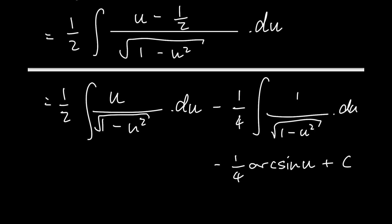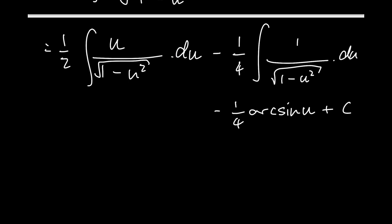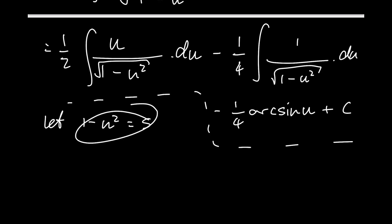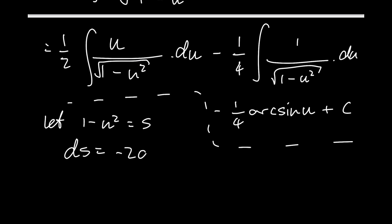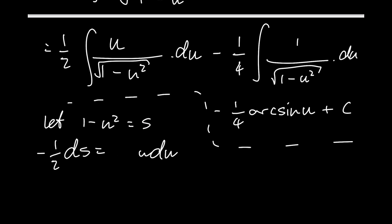For this first integral, we're going to make a substitution. We're going to let 1 minus u squared equal to s. This will be a good substitution because we'll be left with u to the first degree after differentiating, and we have a u to the first degree inside our integral. The derivative of s in terms of u gives us negative 2u du. We have u du, so we just take the negative 2 to the other side: minus 1 over 2 ds is equal to u du.